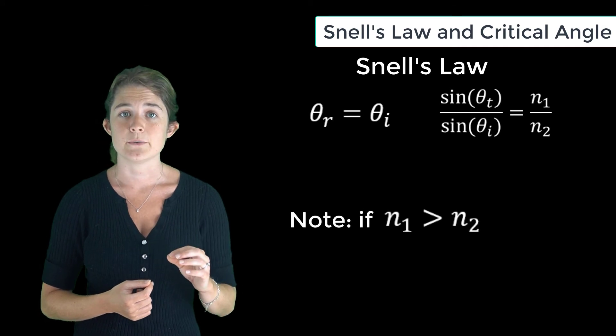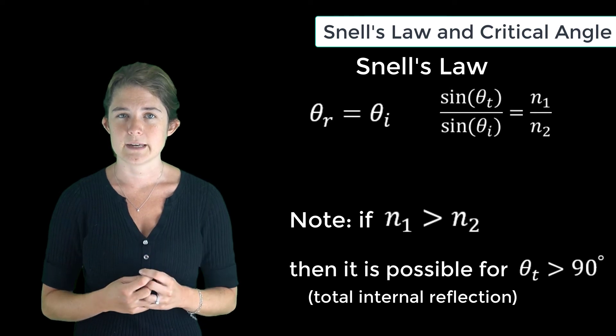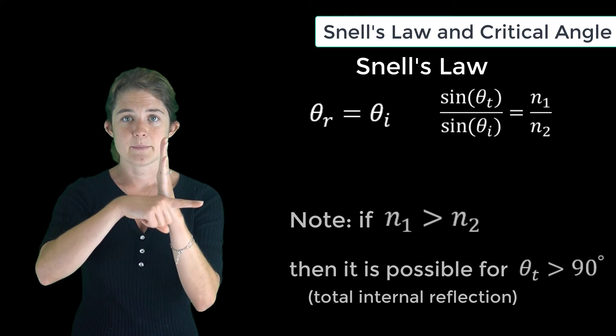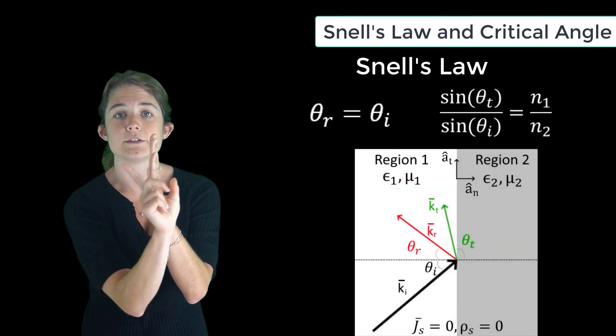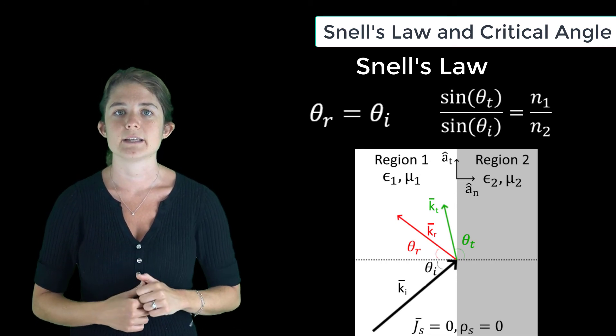...there is a possibility for the transmitted angle theta T to be greater than 90 degrees. If this happens, it will result in total internal reflection where the entirety of the wave ends up being reflected into the first medium.